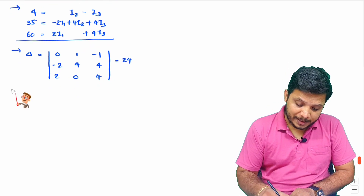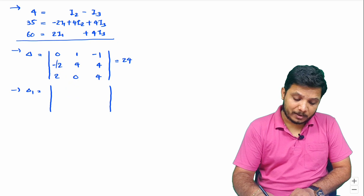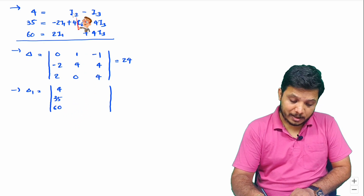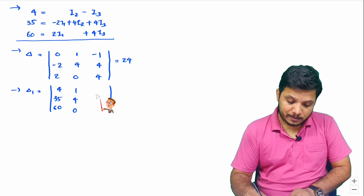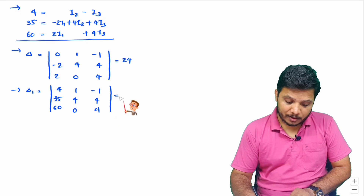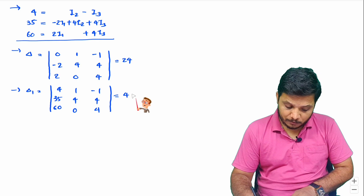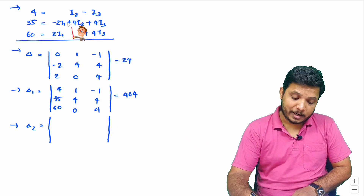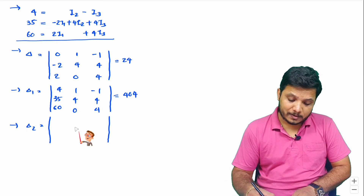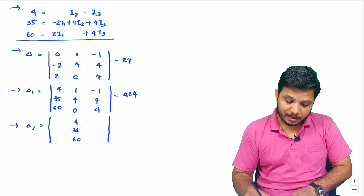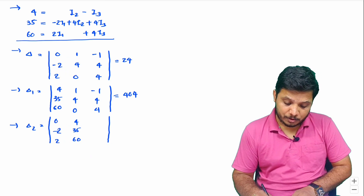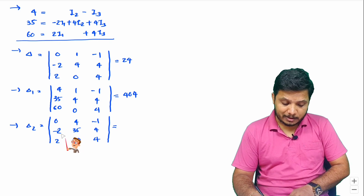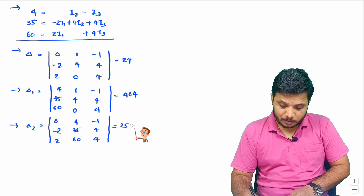Now let us find delta 1: replace the first column with the constant elements [4, 35, 60], keeping the rest the same — [1, 4, 0; −1, 4, 4]. Solving this matrix gives delta 1 equals 404. For delta 2: replace the second column with [4, 35, 60], with the remaining columns [0, −2, 2] and [−1, 4, 4]. Solving gives delta 2 equals 254.